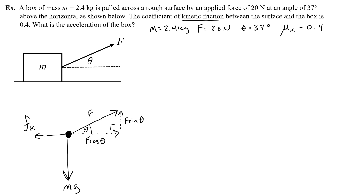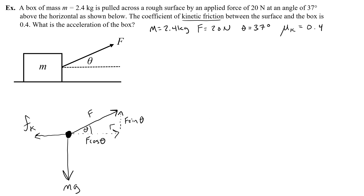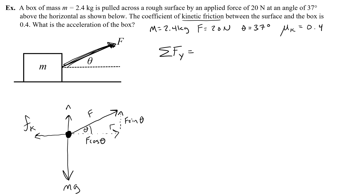Then I figure out what else is acting on the object. There's a weight force down — draw your weight force a little bigger, there's a reason for that. There's friction acting to the left, which we call Fk. And of course, the normal force. The box is not accelerating up or down — it's accelerating to the right. So I know that all the y forces are going to equal zero.